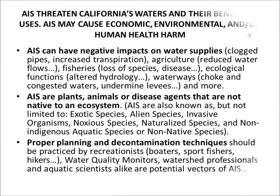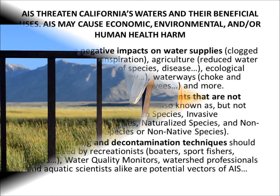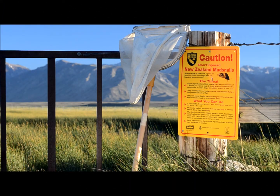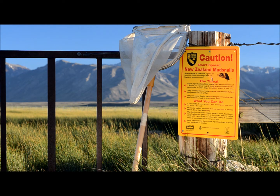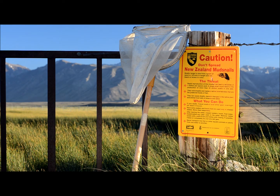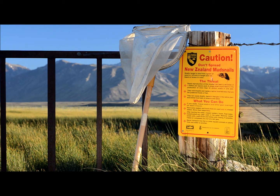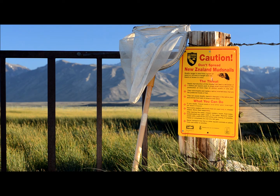Aquatic invasive species threaten California's waters and their beneficial uses. Aquatic invasive species may cause economic, environmental, and even human health harm. They can have negative impacts on our water supplies, agriculture, fisheries, ecological functions, waterways, and more.